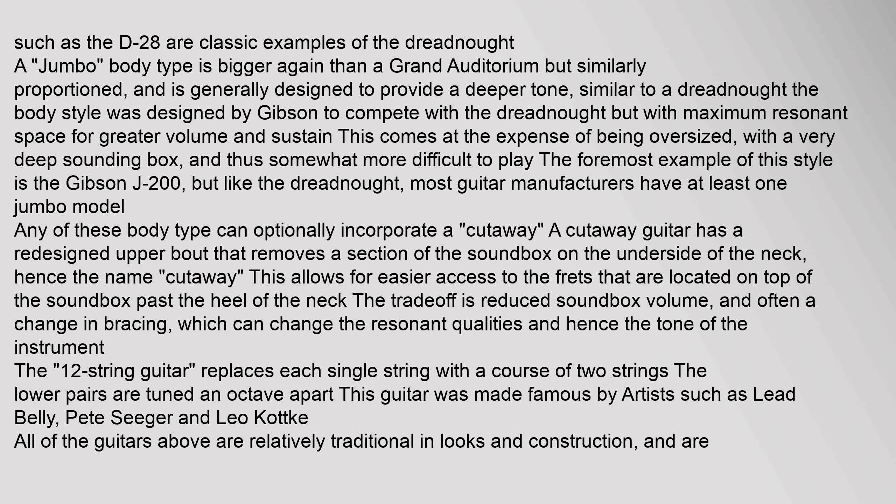Any of these body types can optionally incorporate a cutaway. A cutaway guitar has a redesigned upper bout that removes a section of the soundbox on the underside of the neck, hence the name cutaway. This allows for easier access to the frets located on top of the soundbox past the heel of the neck. The trade-off is reduced soundbox volume, and often a change in bracing, which can change the resonant qualities and hence the tone of the instrument.